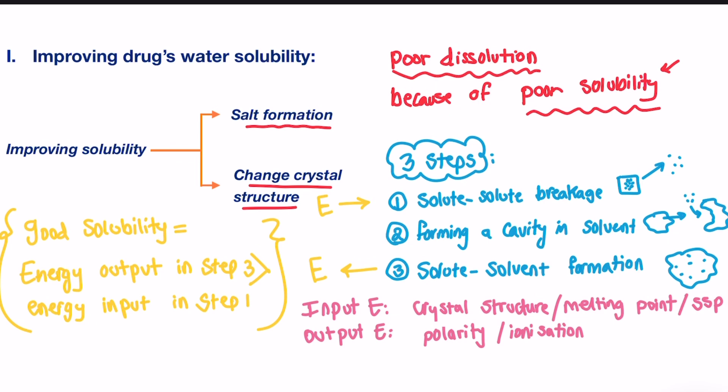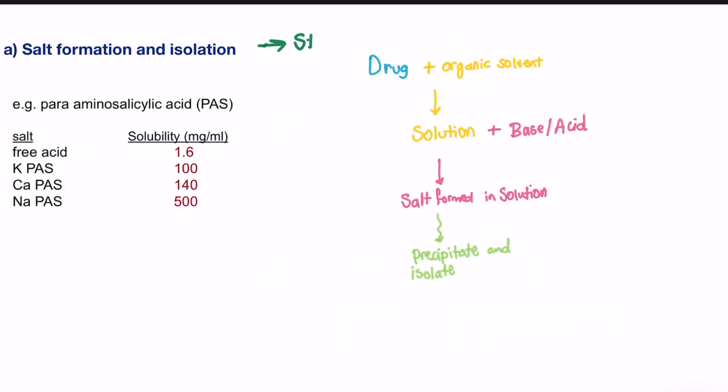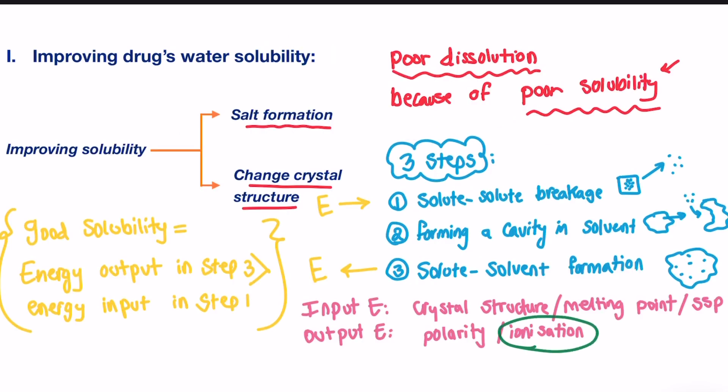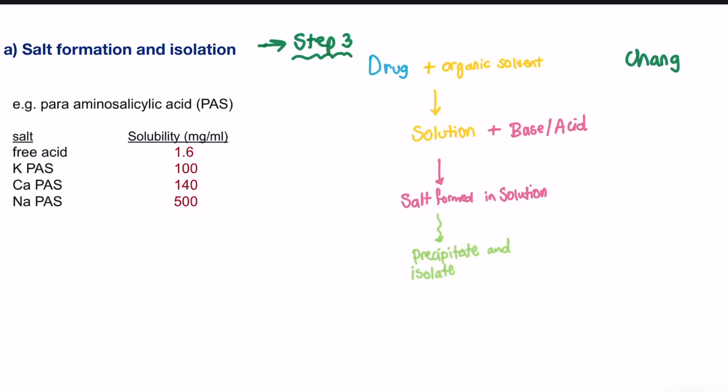Let's see how salt formation improves the solubility of these poorly water-soluble drugs. This technique targets step three output. By changing the ionization state of the drug, it increases the energy output, and therefore, results in better solute-solvent interaction, which means better solubility and more dissolution of the drug.